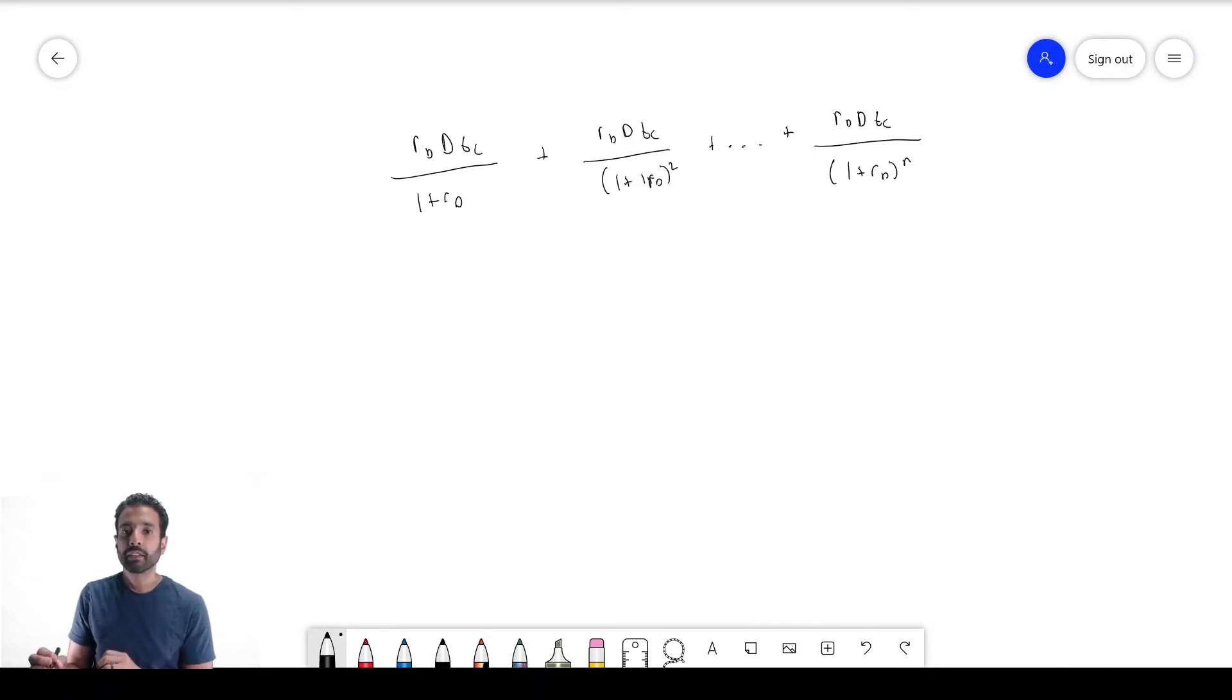There's actually a handy math shortcut that helps us simplify this. When you see something in this pattern—the same term on top divided by 1 plus something to the first, second, third, and on and on—that actually simplifies down to that term on top, RD*D times the tax rate, divided by that RD on the bottom. That even simplifies more into TC times debt. This is the present value of a tax shield that increases the value of your company if you get that amount every year.